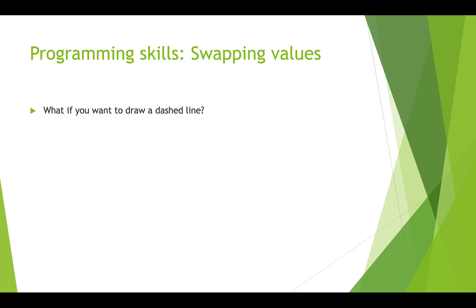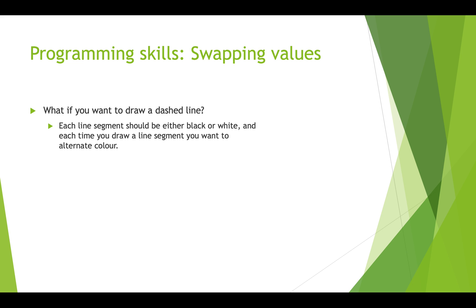There's a common situation where you've got a value in one variable and a value in another variable and you need them to be switched. For example, if we wanted to draw a dashed line in Processing, each segment should be either black or white, and every time we draw a line segment we want to switch to the alternate color.